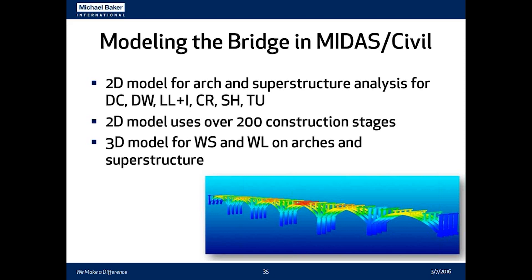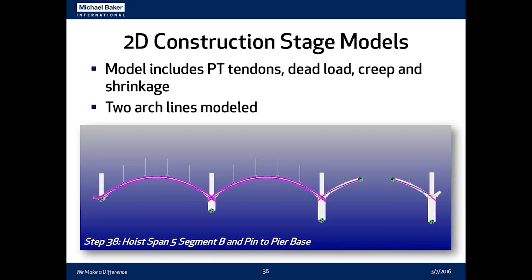In our 2D construction stage model, post-tensioning tendons were included. Here's just one of many stages — step 38 — where in this case post-tensioning tendons are shown by the purple line. Since this was a time-dependent analysis, it included every dead load in place at the time, plus creep, shrinkage, primary and secondary post-tensioning effects, and any losses of force in the post-tensioning. We had two separate 2D models for the six continuous arch rib spans, because differences in pier heights created different stiffnesses at arch ends, leading to different moment versus axial force behavior in adjacent arch spans.